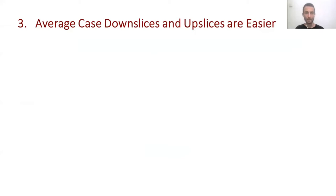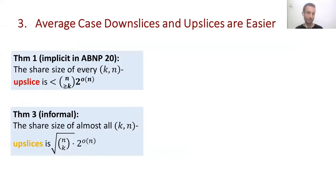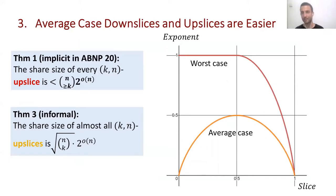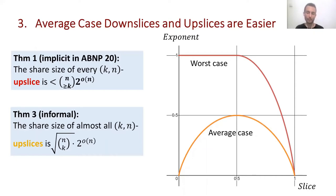Another insight is that the average case is easier than the worst case for secret sharing for down-slices and up-slices. The average-case exponent is much easier — for example, for the middle slice, the exponent in the worst case is n, but in the average case it will be half n. A similar phenomenon exists for down-slices and even for linear schemes. Similar results were obtained by Bimel et al. for up-slices with a constant k; here we give the full picture for every possible up-slice and down-slice.